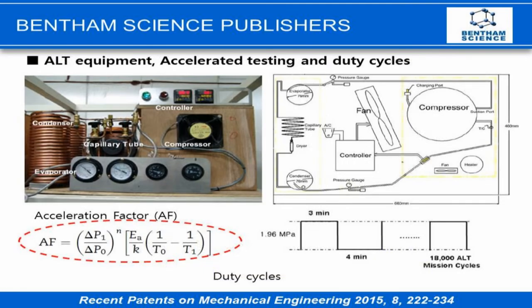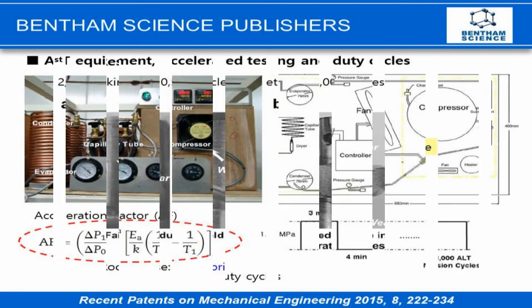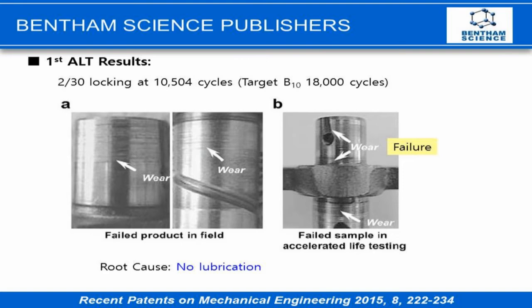We set up the Parameter ALT equipment with repetitive pressure. In the first ALT, we found two failure products with no lock at 18,000 cycles.